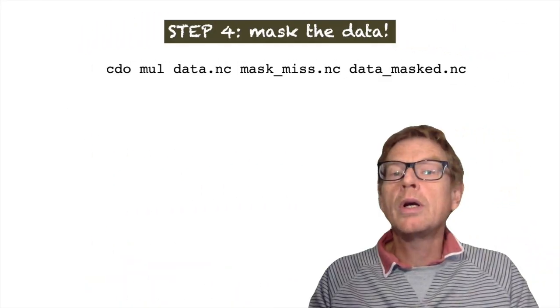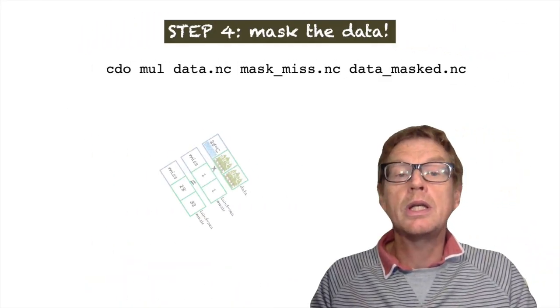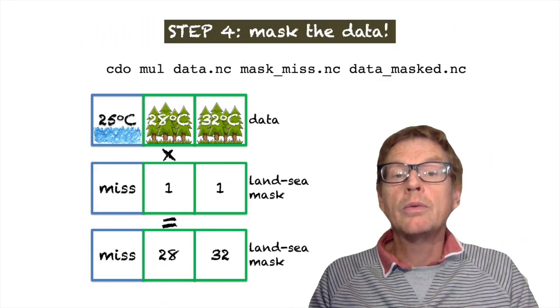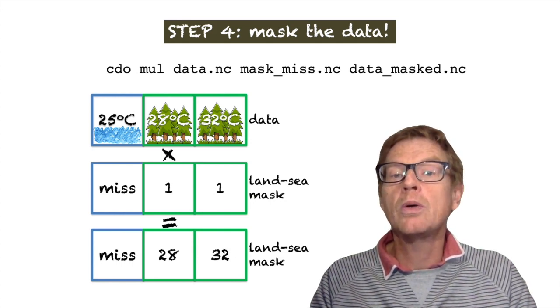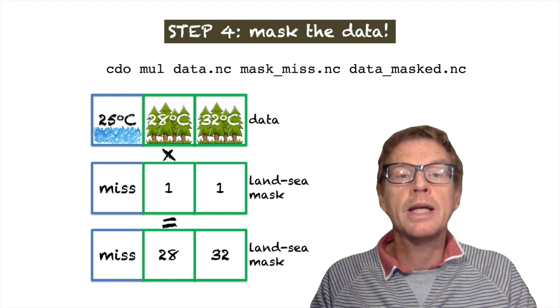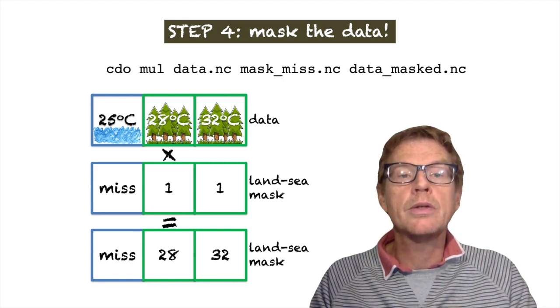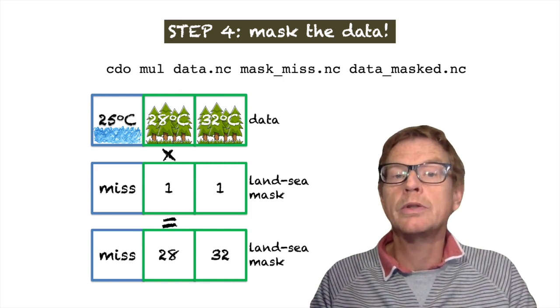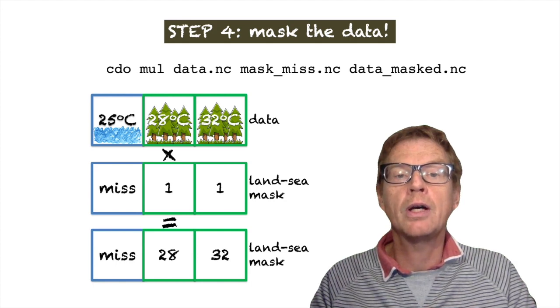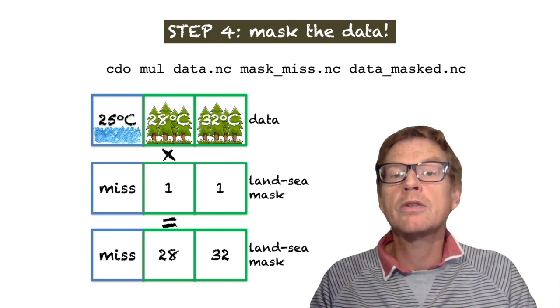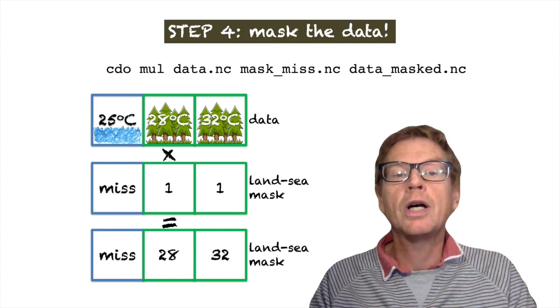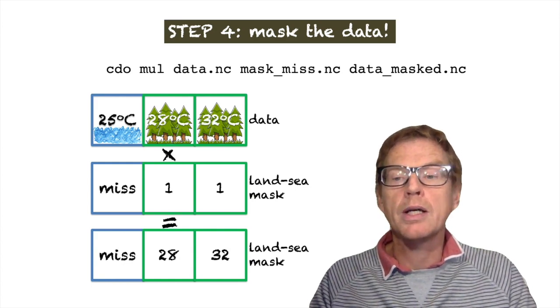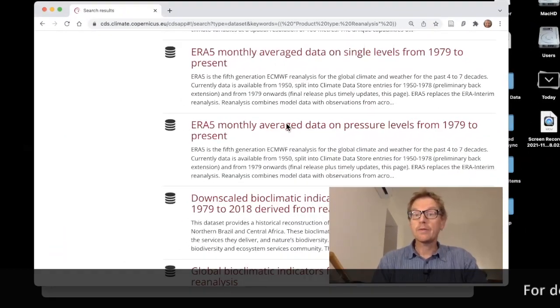So now we're able to mask the data using CDO multiply with the data and then the mask to provide the final output, which is a masked data set. So in this case, using this operation of mul to multiply two fields, it will take the data file. It will take the masked file with the missing points set over ocean and will provide a file which is correctly masked.